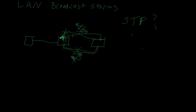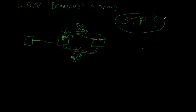Once the line is repaired, it's going to shut that port back off again, because it's the same port with the same properties. You can actually configure which port gets shut off — you pick which one you want. But that's how you fix a broadcast storm: Spanning Tree Protocol.